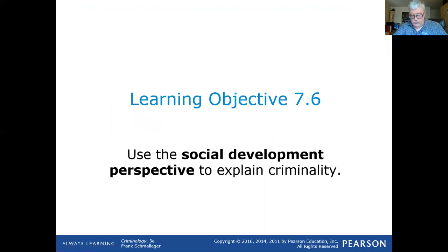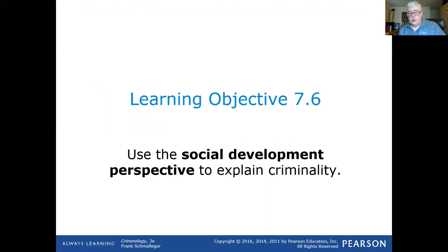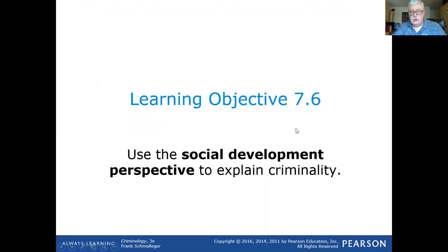That's enough for labeling theory and the policy implications of social process theories. When we come back, we're going to pick up on the social development perspective to explain criminality and go through several theories in there. There's a lot of material in the next section, but it's all about social development theories. We'll catch you when you come back.